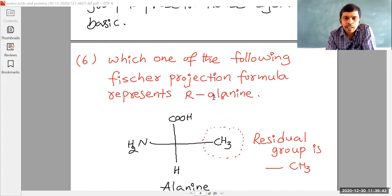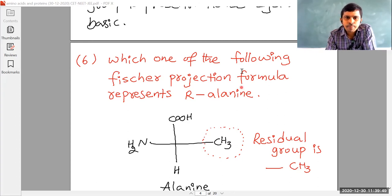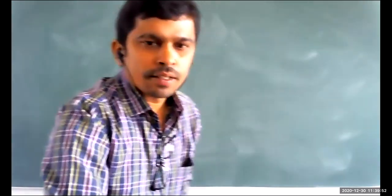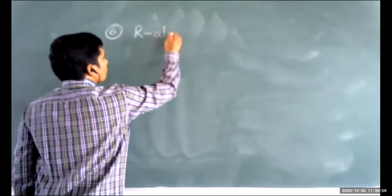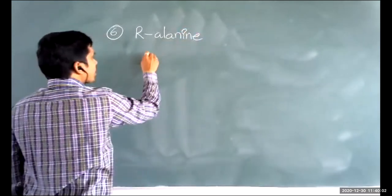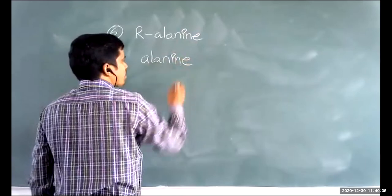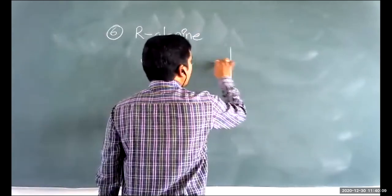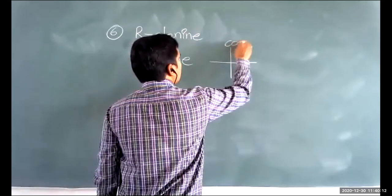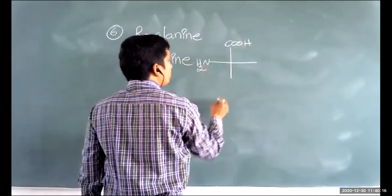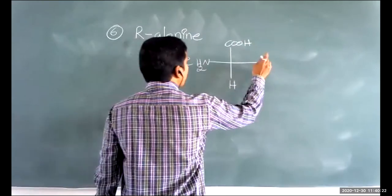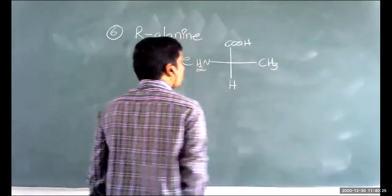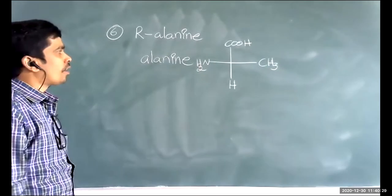In the last video, we discussed glycine and alanine. On the board, I'm going to write what is alanine. I'm taking alanine first — not saying whether it is R or S. Simply, I'm going to take the alanine by taking a cross: at the top, COOH group; at the left side, NH2 group; at the bottom, hydrogen; and here the residual group, which is replaced with CH3. Then this is called as alanine.